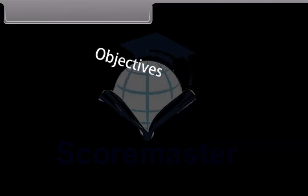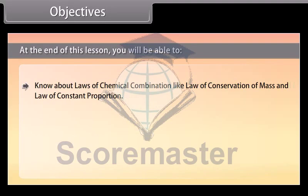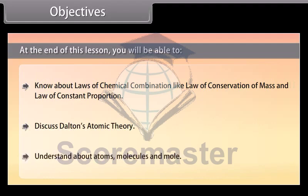Objectives. At the end of this lesson you will be able to know about laws of chemical combination like law of conservation of mass and law of constant proportion. Discuss Dalton's atomic theory and understand about atoms, molecules and mole.